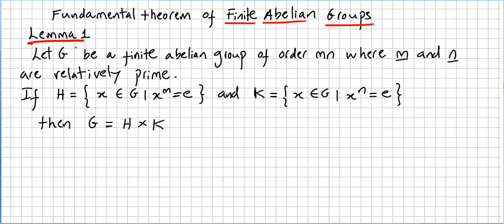The first lemma, proved in a previous video: let G be a finite abelian group of order m times n where m and n are relatively prime. If H is the set of x in G such that x to the power of m equals the identity, and K is the set of x in G such that x to the power of n equals the identity, then G equals H times K.